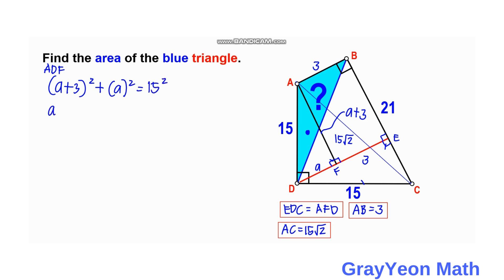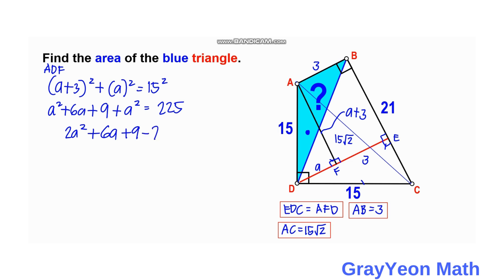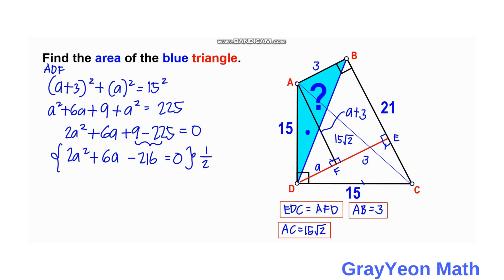Expanding: A squared plus 6A plus 9 plus A squared equals 225. So we have 2A squared plus 6A plus 9 minus 225 equals 0, which simplifies to 2A squared plus 6A minus 216 equals 0. Multiplying all terms by one-half, we get A squared plus 3A minus 108 equals 0.